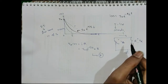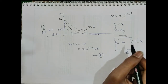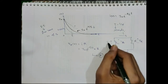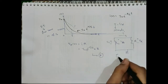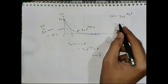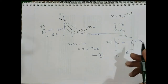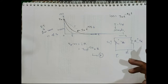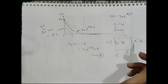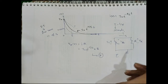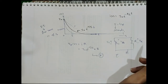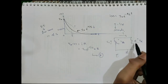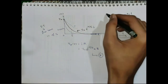Working with a source-free RL circuit requires finding: first, the initial inductor current I₀; second, the time constant τ = L/R, which depends on the inductor and resistor values. When a circuit has a single inductor with several resistors and dependent sources, the Thevenin equivalent resistance at the inductor terminals is used to form a simple RL circuit.